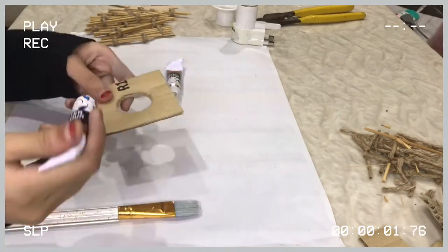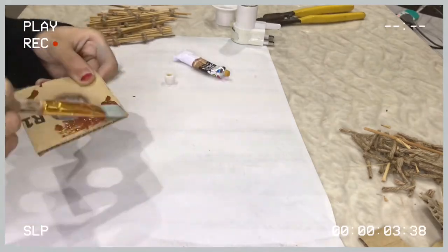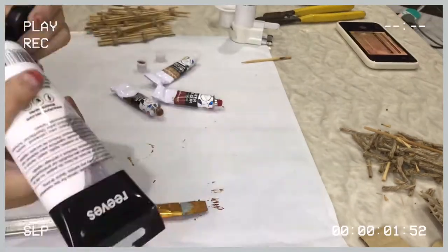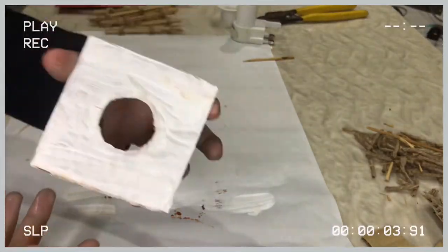Moving on, I painted the base with a mixture of brown and white paint and then afterwards I let it dry. But if you want to shorten the drying process, then just use a hairdryer. That works too.